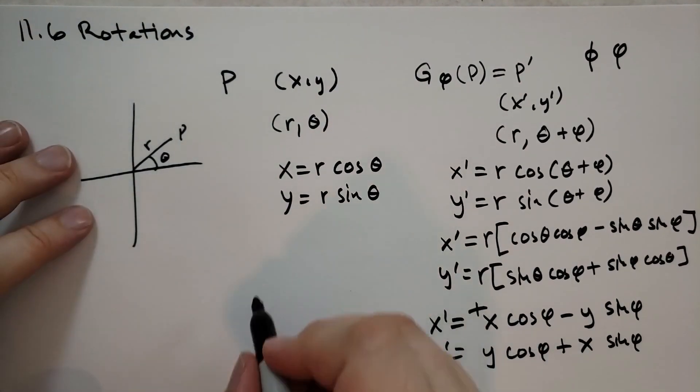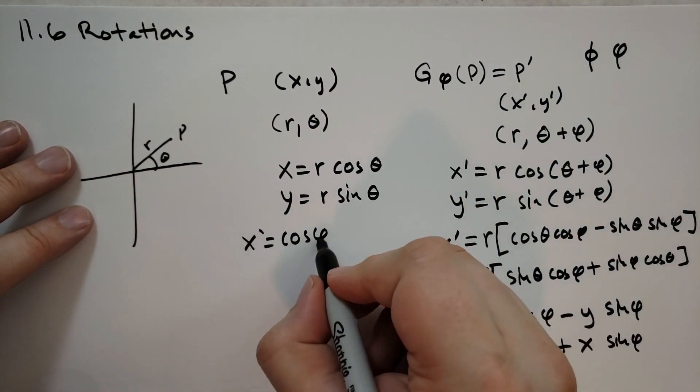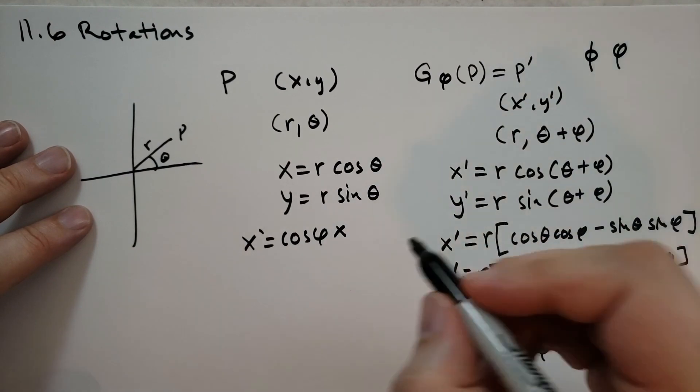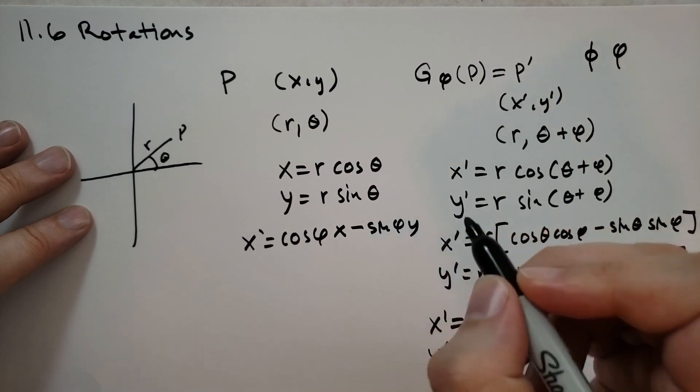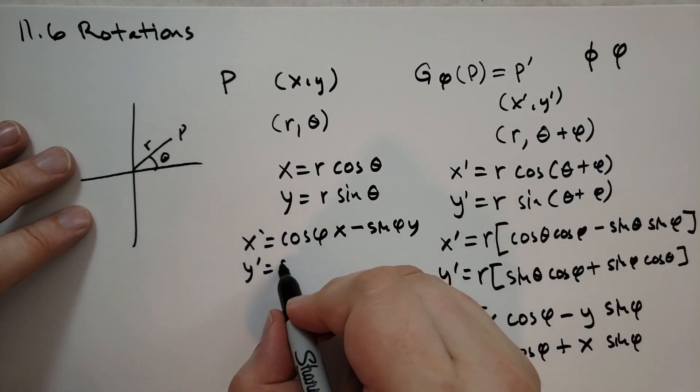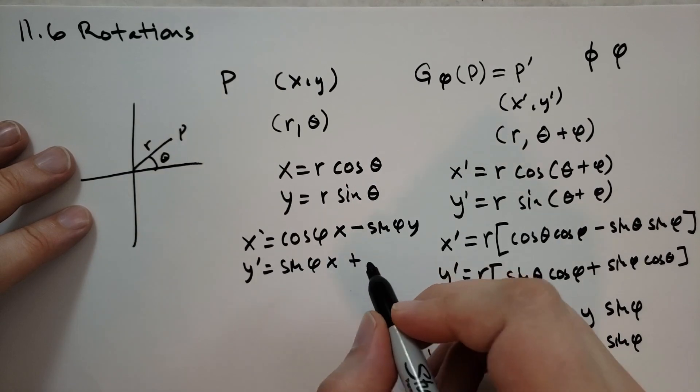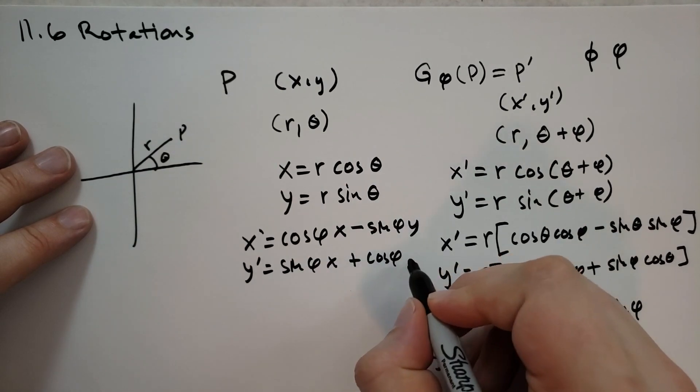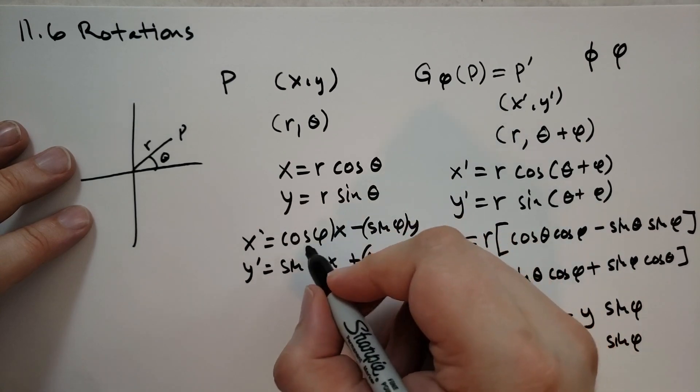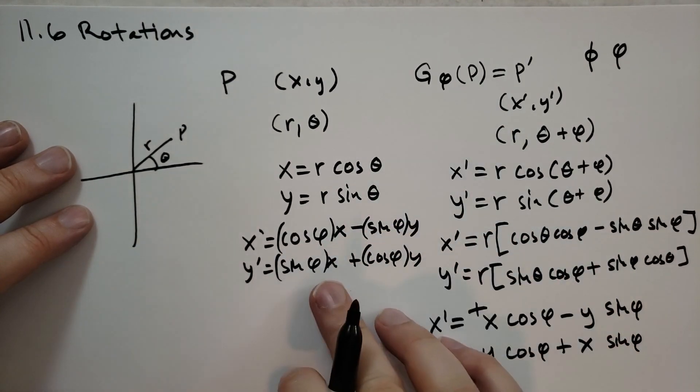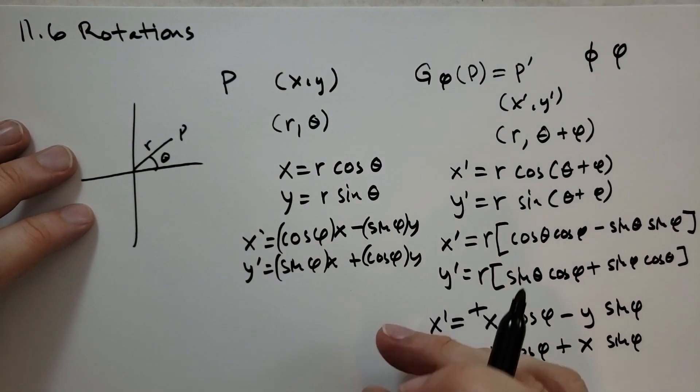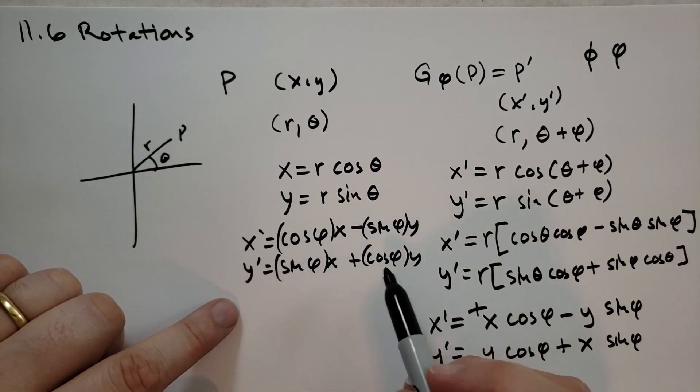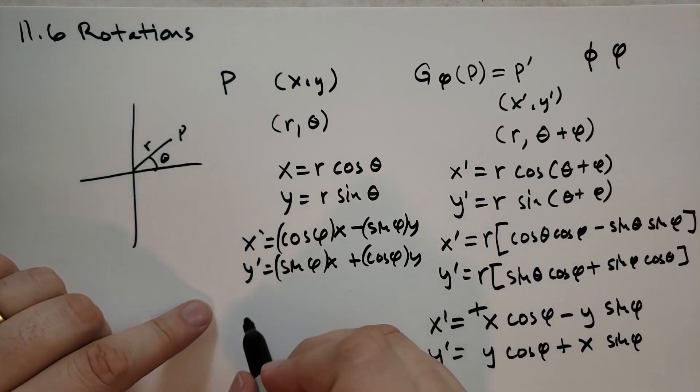And we can rewrite these a little bit more eloquently. x prime is equal to cos phi, x, minus sine phi times y. x prime is equal to y, and y prime is equal to sine phi of x, plus cos phi of y. I'm going to put these in parentheses, so we know that we're not taking the angle of x. We're not taking cosine of phi times x. So these four numbers, cosine, sine, sine, cosine. We can write these four numbers this way. We can write it as cosine phi, minus sine phi, sine phi, and cosine phi.